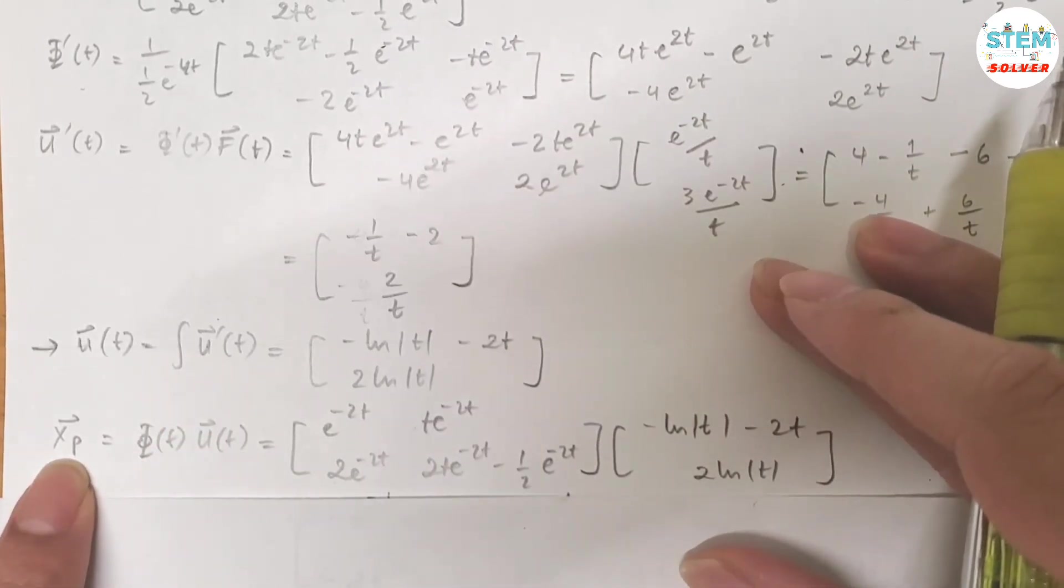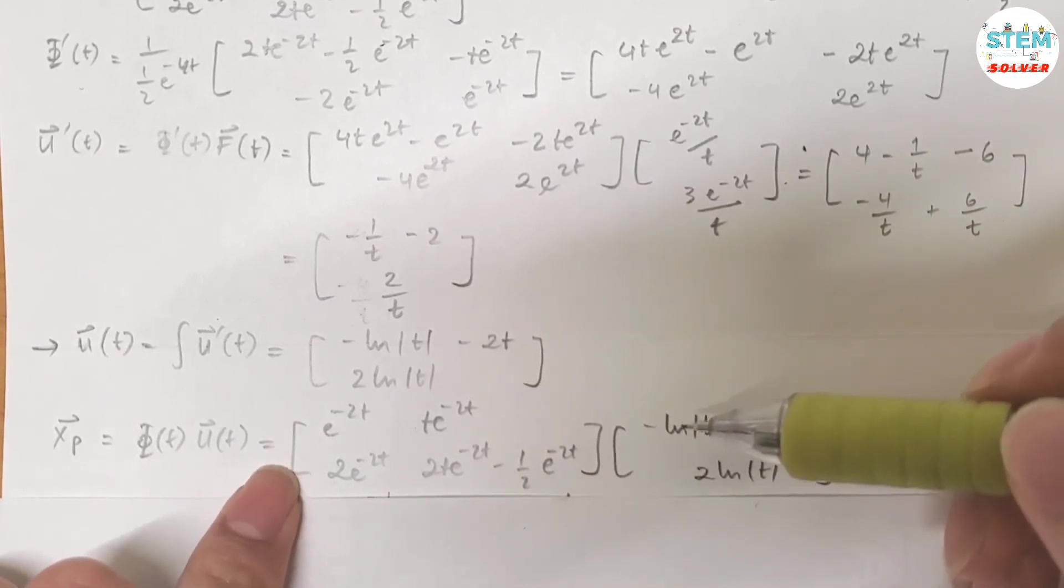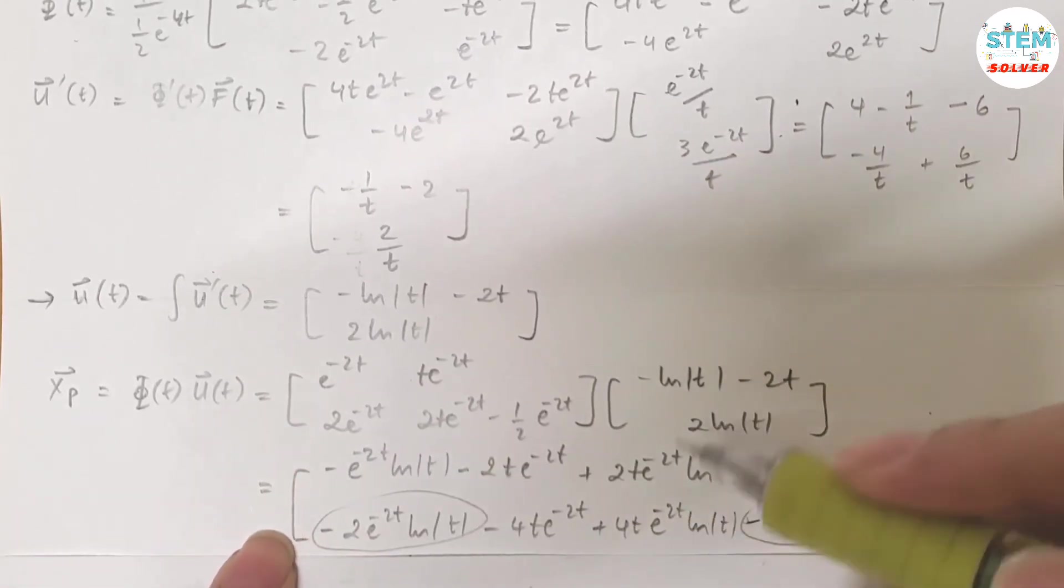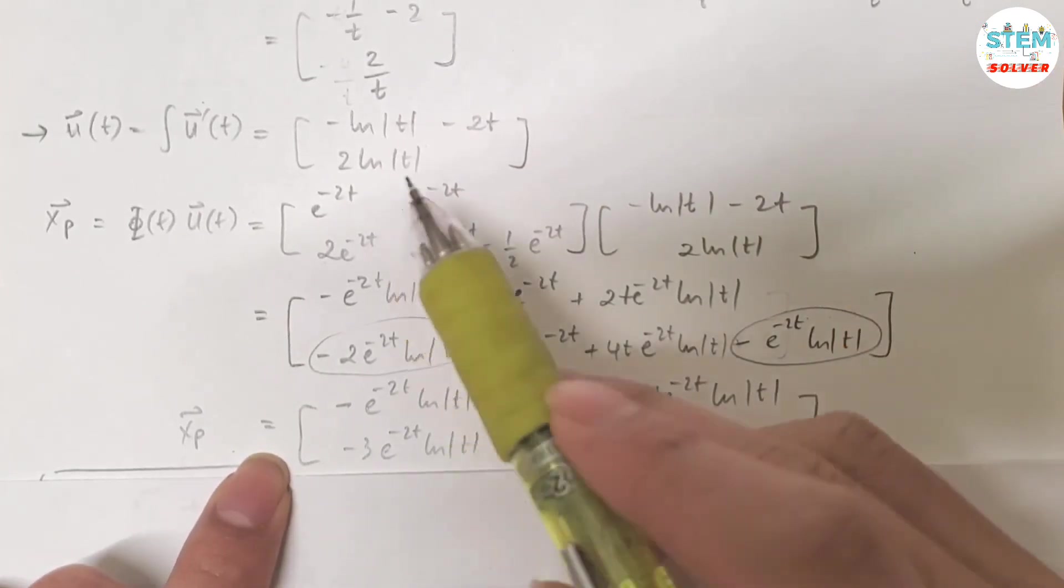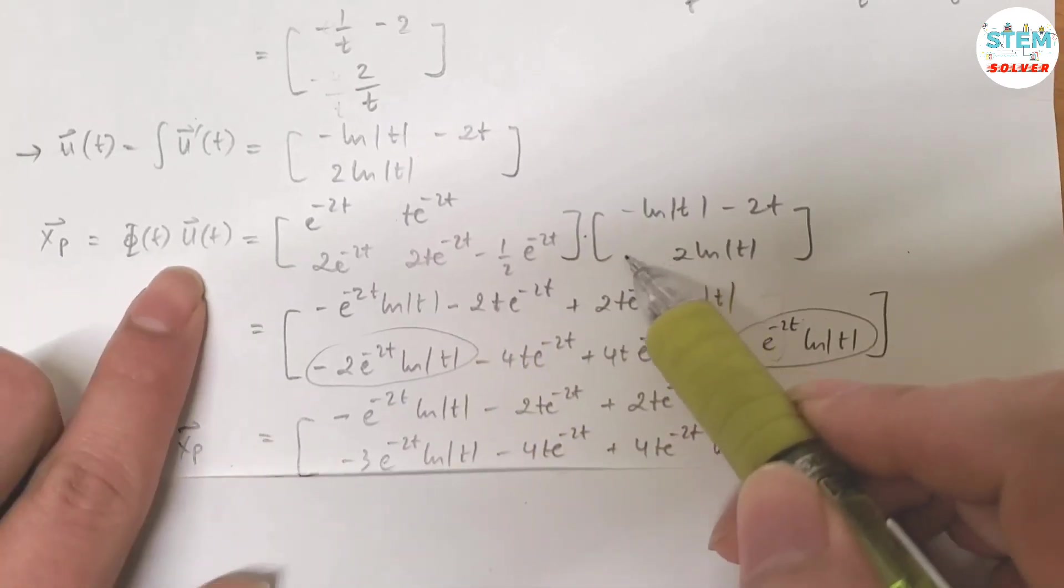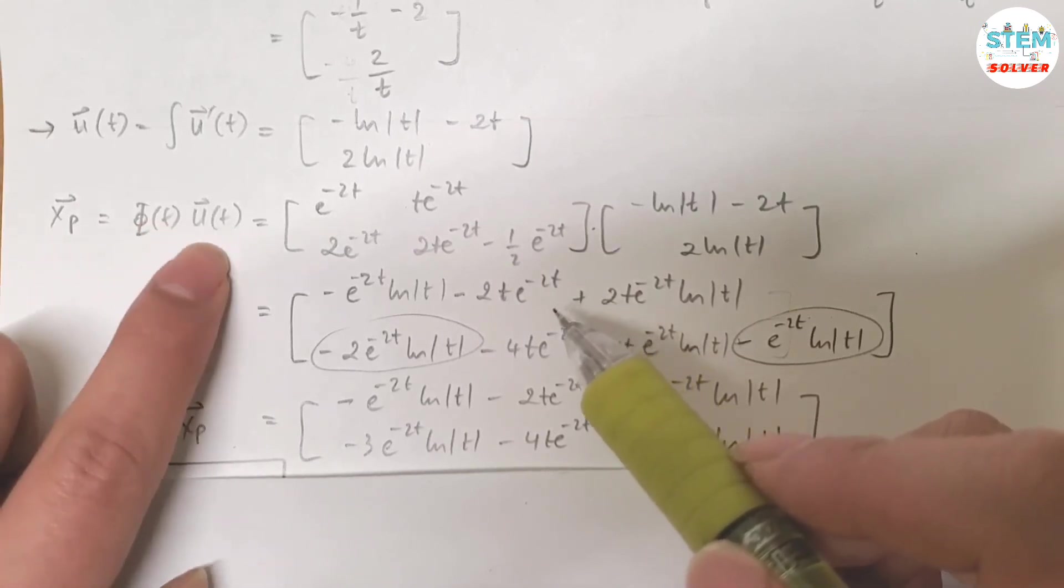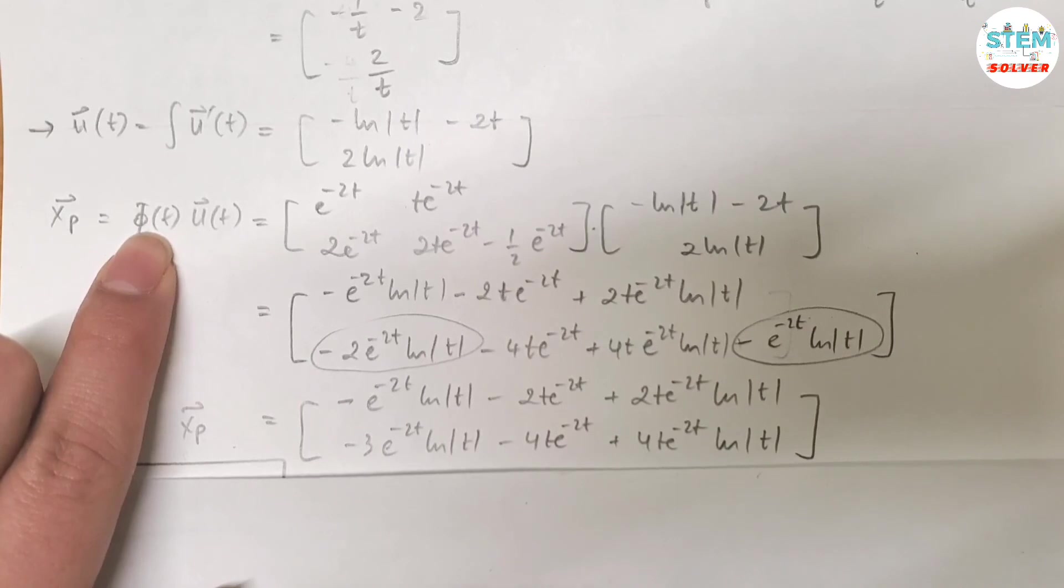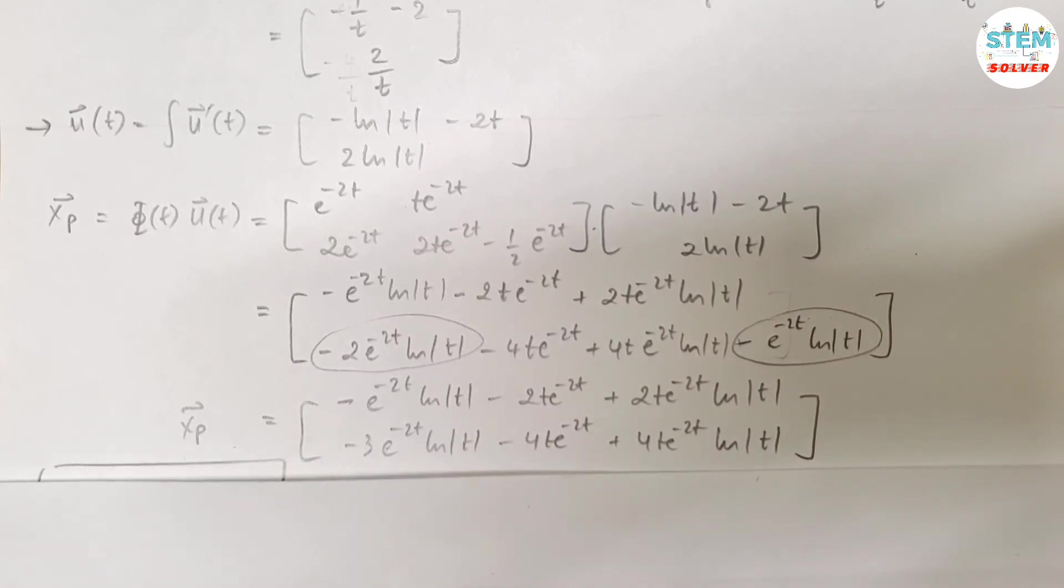So now write your non-homogeneous part. It is equal to Φ(t) times u(t). So multiply these matrices together, it gives you this matrix. Simplify it, you will get this matrix. So for this one, again, do not swap the order because you multiply matrices together and this is the correct order. You cannot just pull this in front and say that vector u times vector Φ is the same as vector Φ times vector u. No, for matrices it's not the same. And your final answer is equal to homogeneous part plus non-homogeneous part.